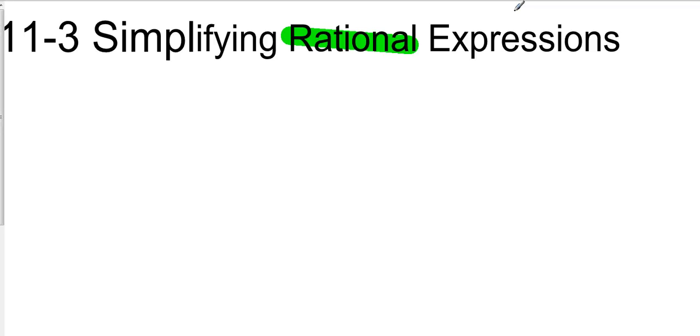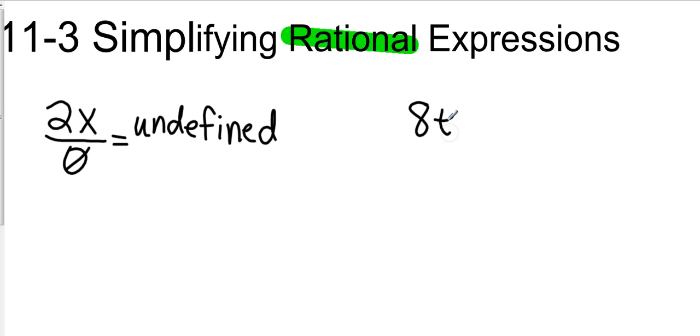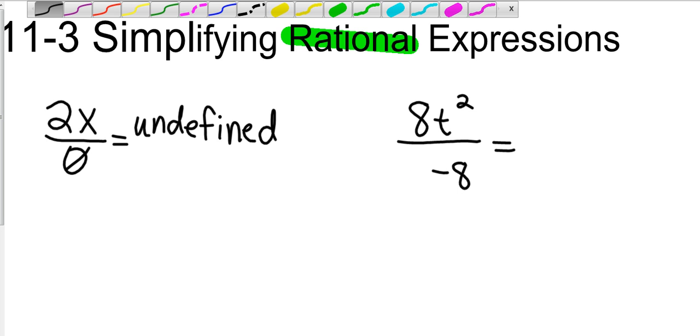The first thing I want to get to is, we have talked about in the past that when we have fractions, we cannot have a zero on the bottom because that's undefined. And so what we're going to start off with right away is let's say I have the expression 8t squared all over x minus 8. Excuse me, let's go with t.